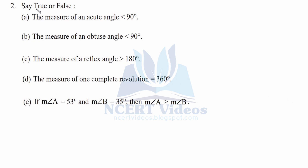Second, say true or false. First part: the measure of an acute angle is less than 90 degrees — this is true. Part B: the measure of an obtuse angle is less than 90 degrees — this is false; it is greater than 90 degrees and less than 180 degrees, so we will cross it. Part C: the measure of a reflex angle is greater than 180 degrees — this is true.